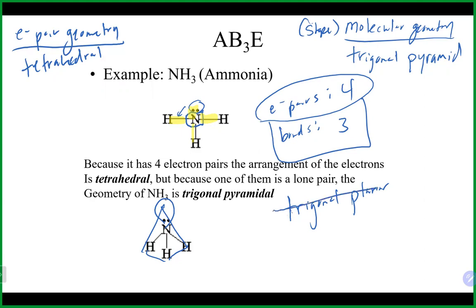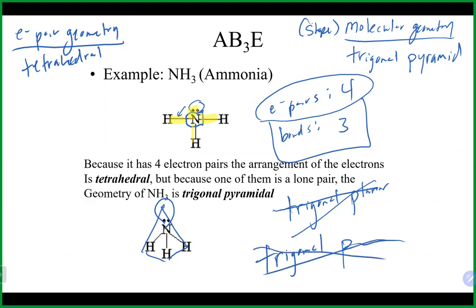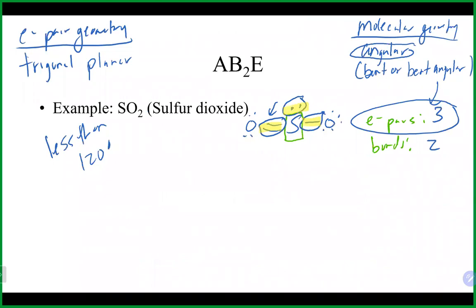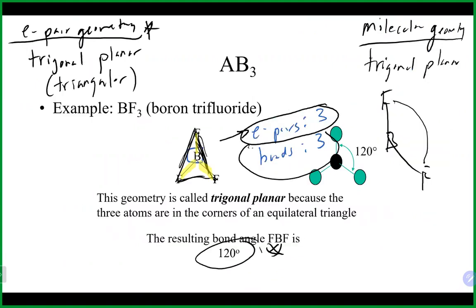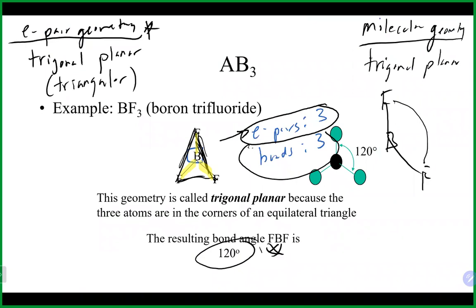You cannot just write 'trigonal' — you have to go trigonal planar or trigonal pyramid, because I won't know which one you mean. So choose either trigonal planar or trigonal pyramid. Trigonal planar is the one with three electron pairs and three bonds. Trigonal pyramid has four electron pairs and three bonds.